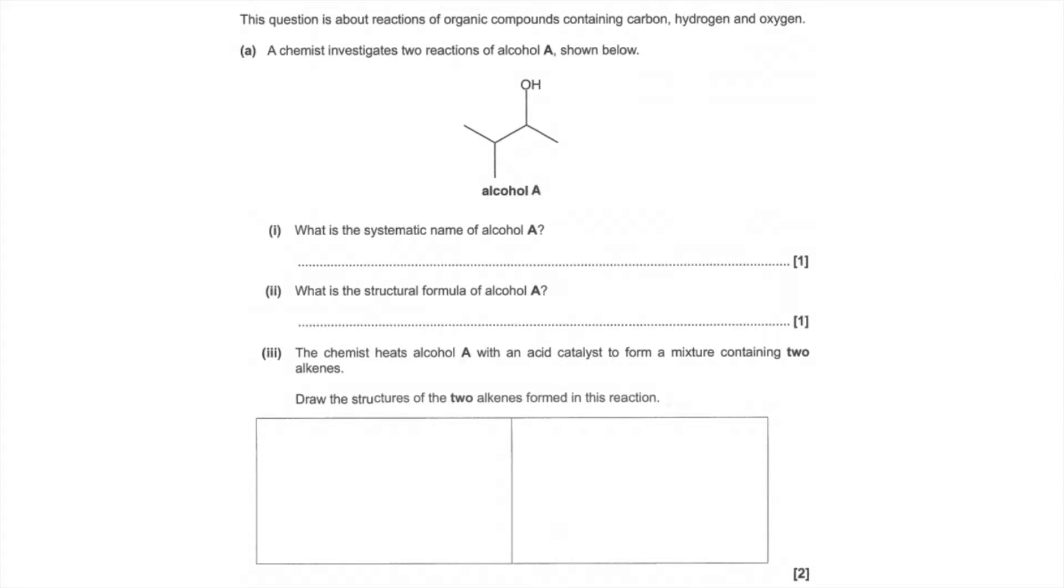Okay, so part A. We've got to give the systematic name for alcohol A. So the longest continuous chain is one, two, three, four long, so it's but. The functional group is on carbon two, shortest number, lowest number is here, two rather than three, so it's butane-2-ol. We've got a methyl group with carbon number three, so it's 3-methylbutane-2-ol.